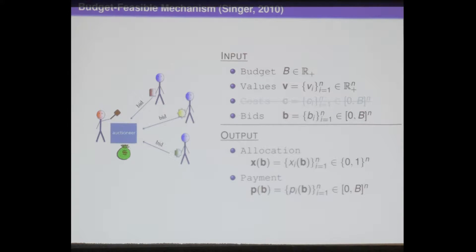The input to a budget feasible mechanism is almost the same as the original knapsack problem, except that the cost of the items are replaced by the bids from the sellers. The output of the mechanism consists of two parts: the allocation and the payments.